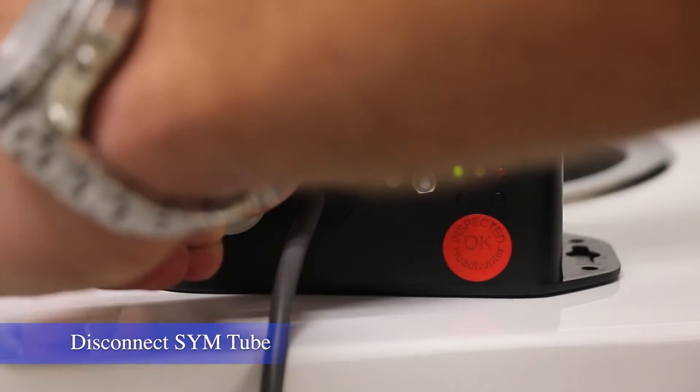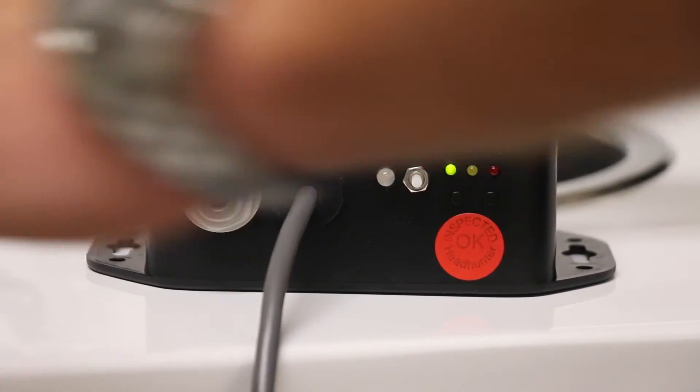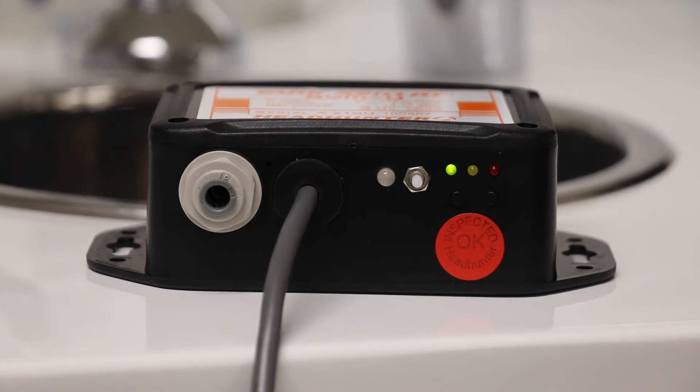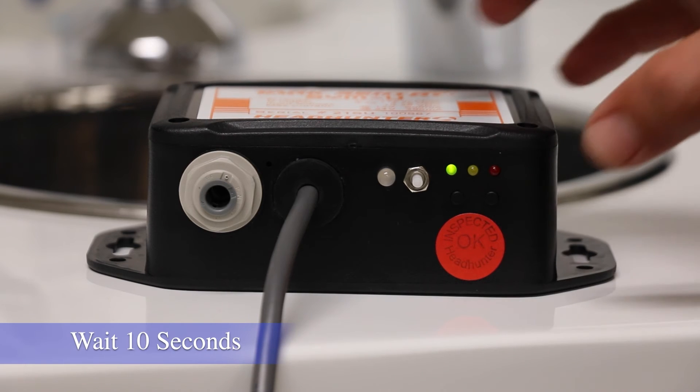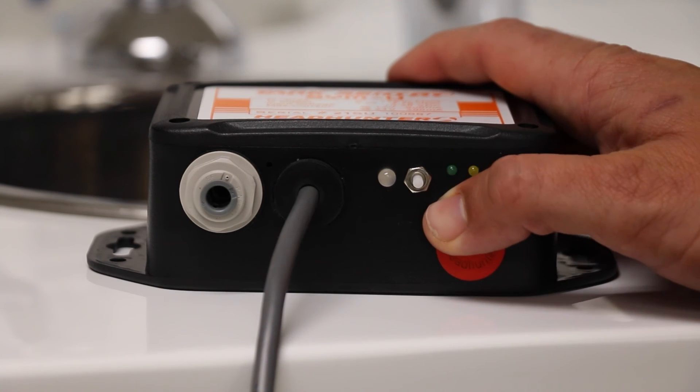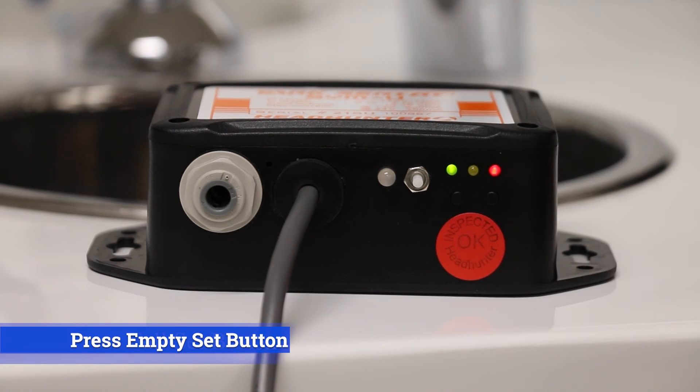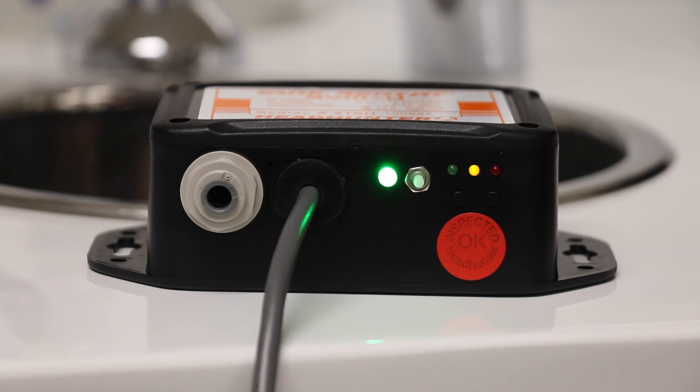Disconnect your tube. Wait 10 seconds for the SIM to register that it's empty and then press your empty set. The current pressure has been set as the full value. Let the SIM purge for 10 to 15 seconds.